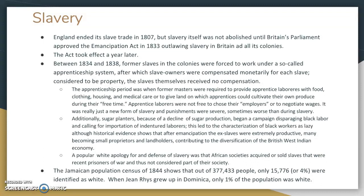But they were characterized as lazy, so when you read through the book you will notice that idea being thrown around. A popular white apology for and defense of slavery was that African societies acquired or sold slaves that were recent prisoners of war, thus not considered part of their society. A lot of white colonists would go out of their way to say they were selling them, so it's not really our fault — but that was an apology they would often try and use.